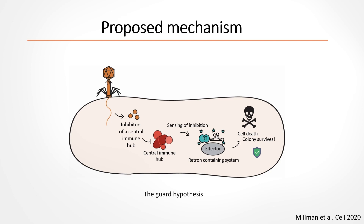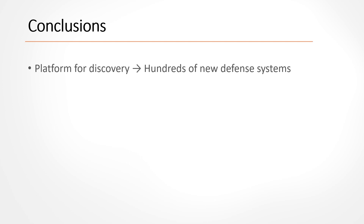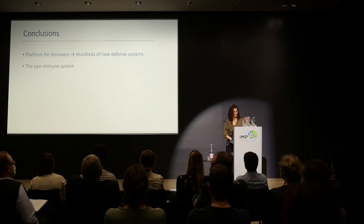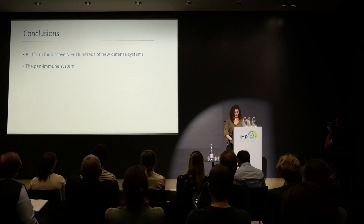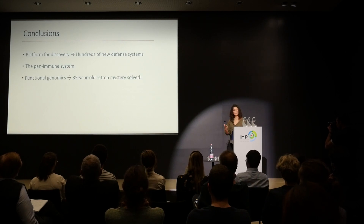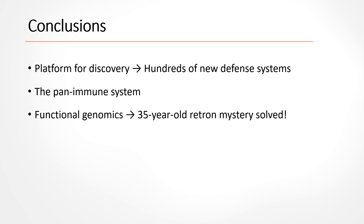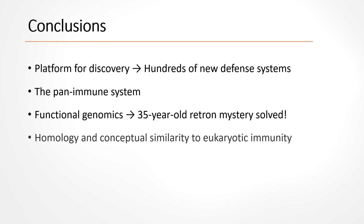To conclude: we've formed a platform for discovery and found hundreds of new defense systems in bacteria. With this global view we can now ask questions about the pan-immune system of bacteria — how do these systems interact, do they have synergistic effects, are there systems that cannot coexist, or systems that cooperate? I also like how functional genomics solved the decades-old mystery of retrons just by having a phenotype and looking at genomes. And a personal favorite theme is the conceptual and actual homologies between eukaryotic and prokaryotic immunity.